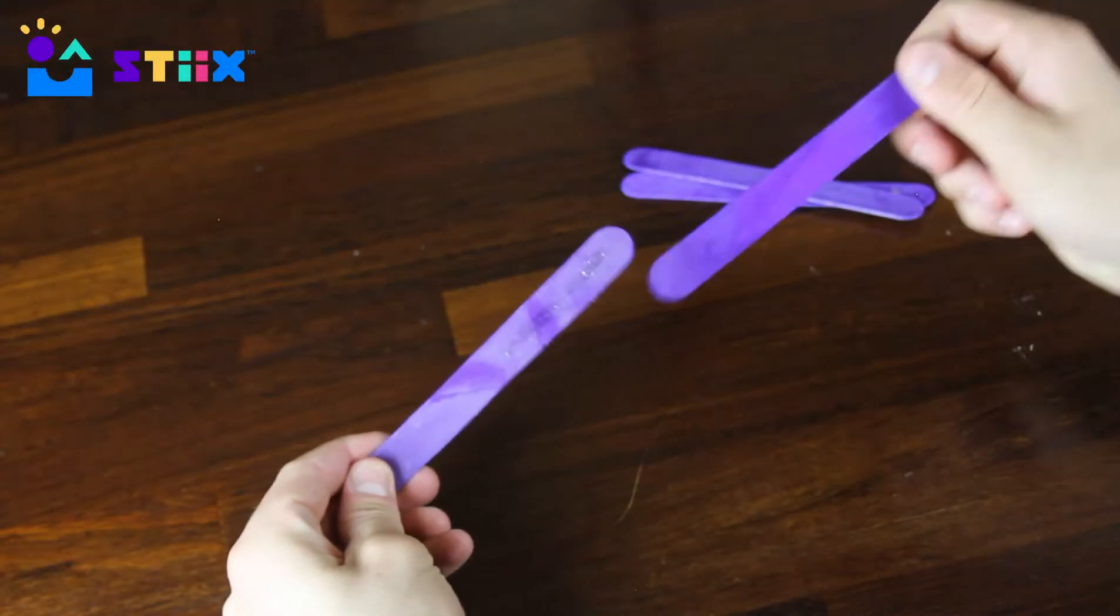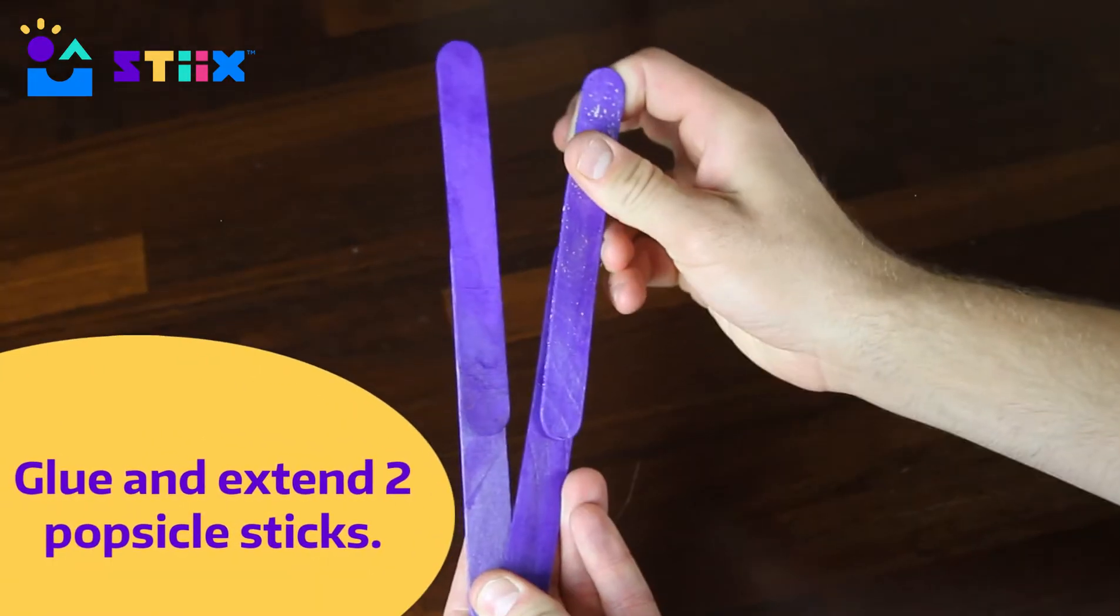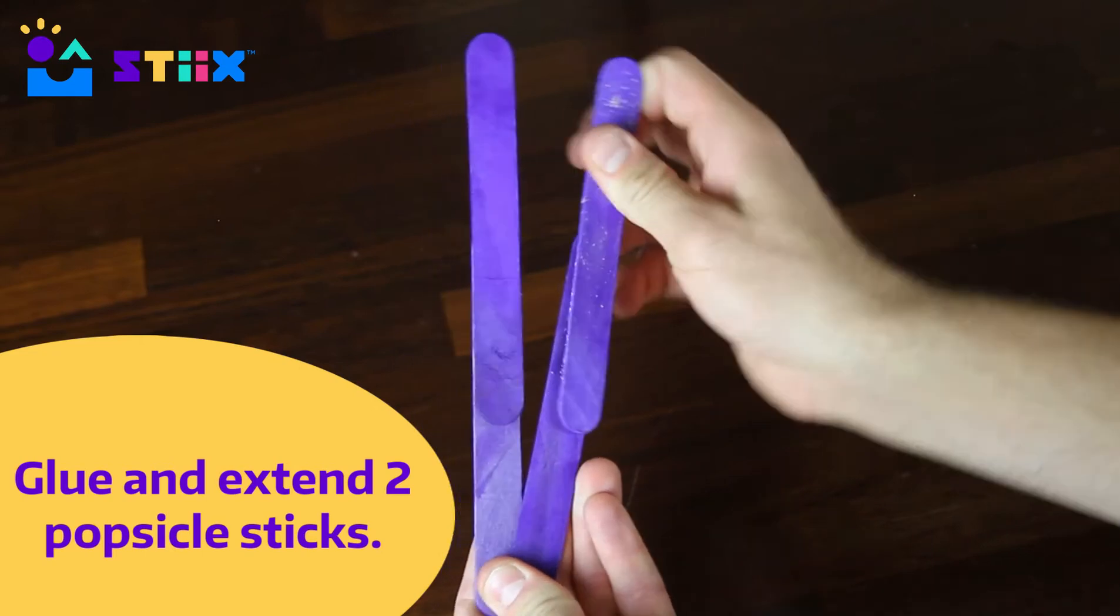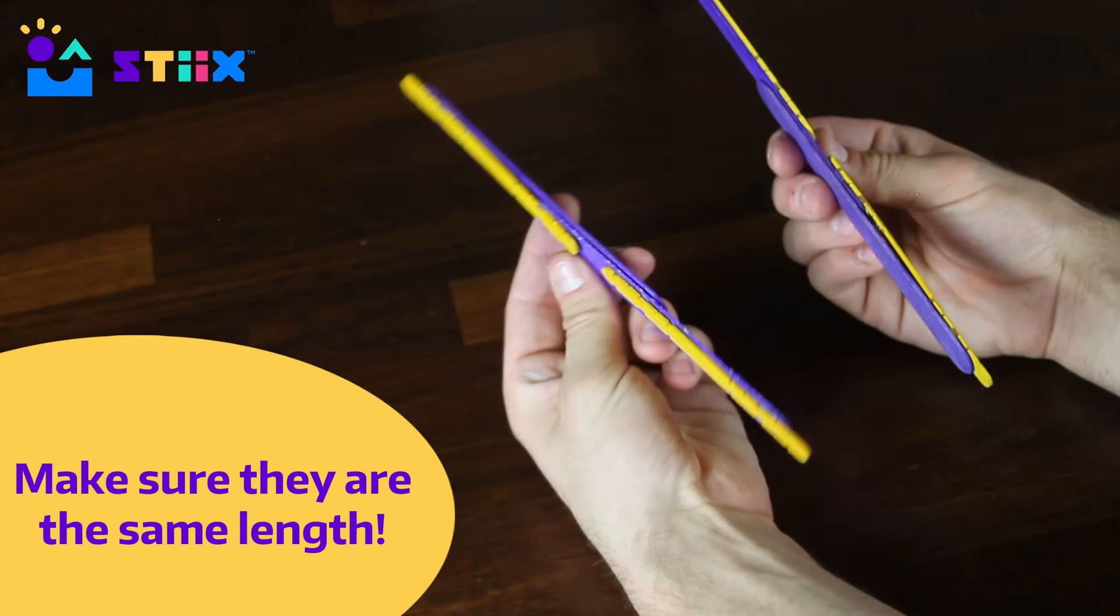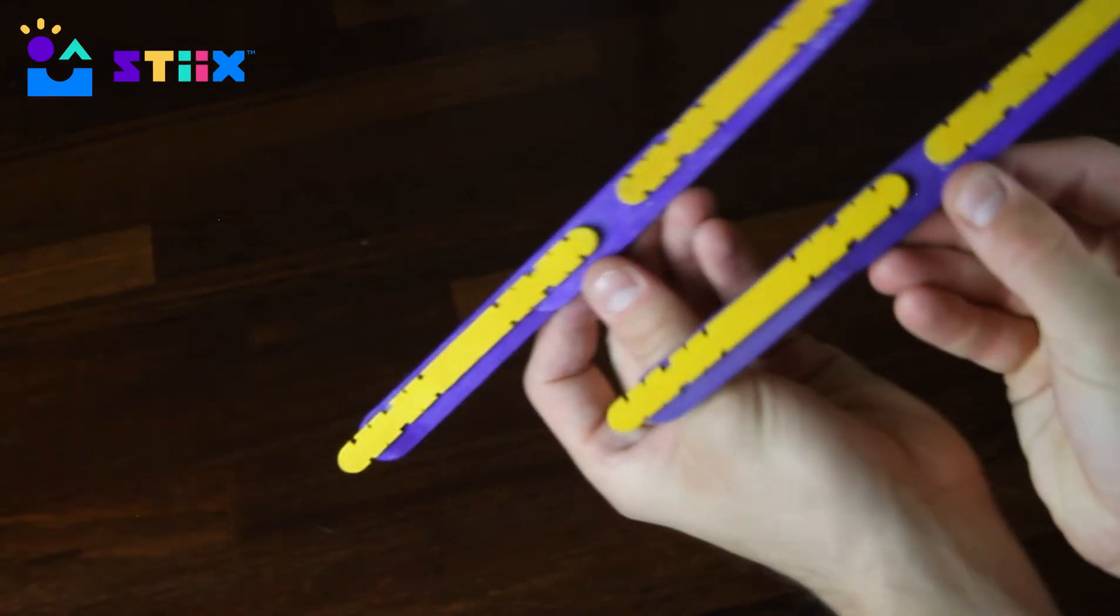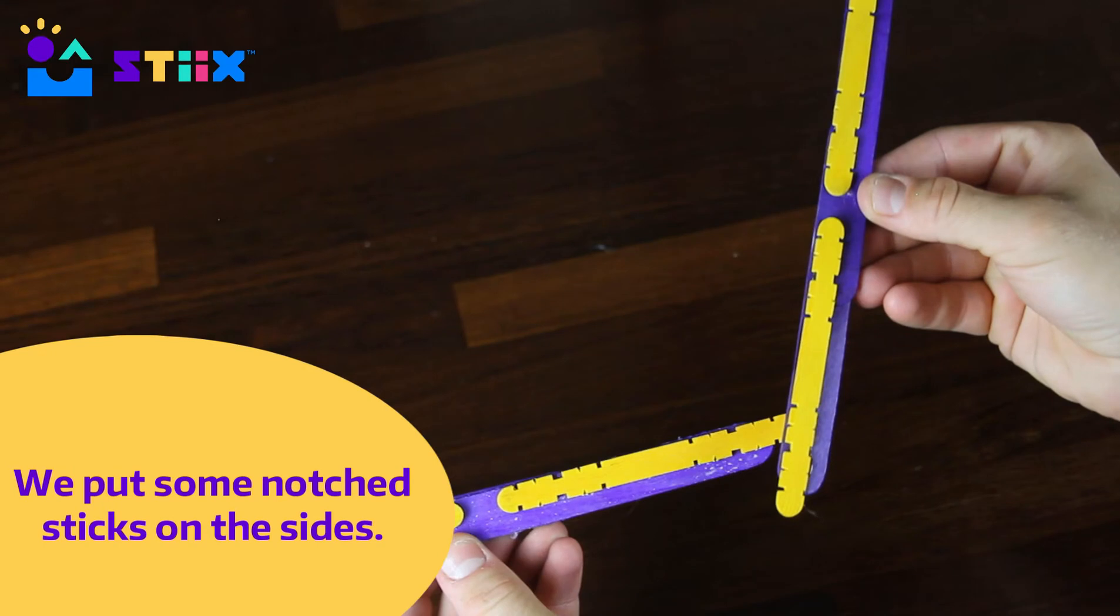If you're going to attempt the more advanced catapult, first off you want to tackle a base. Most bases are rectangular shaped, so it's really important to make sure that the sides are the same length no matter how long you choose to make them. The point of these notched popsicle sticks is to connect them on their little indents, and they make it easy for your popsicle sticks to turn directions.